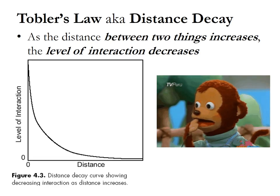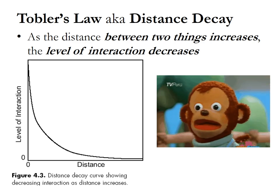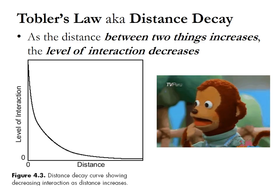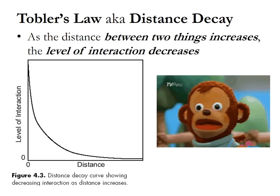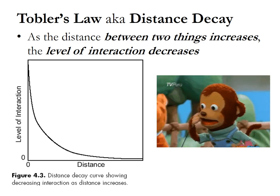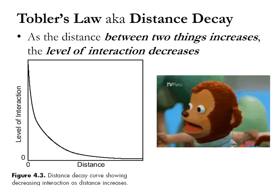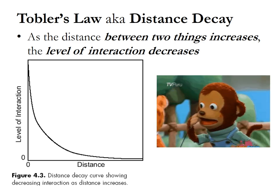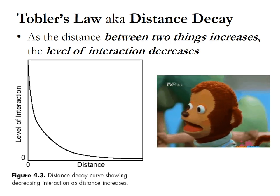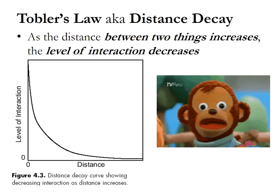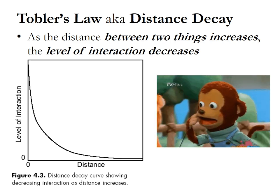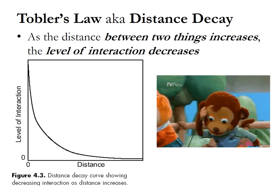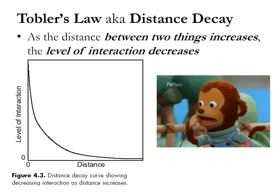First off, what you have to know is Tobler's Law, also known as distance decay. I think this is just the silliest theory in the world. As the distance between two things increases, the level of interaction decreases. I am just shocked — like, the further I am away from something, I am less likely to interact with it. Profound. Class over. Five on the AP exam.